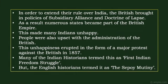In order to extend their rule over India, the British brought in policies of subsidiary alliance and the doctrine of lapse. As a result, numerous states became part of the British Empire, making many Indians unhappy. This unhappiness erupted in the form of a major protest in 1857. Many Indian historians termed this the First Indian Freedom Struggle, but English historians termed it the Sepoy Mutiny.